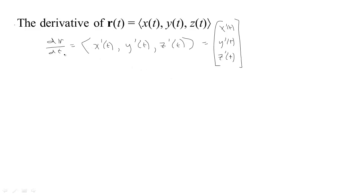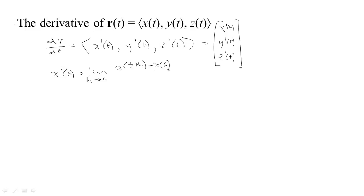So we take the derivative — what does that mean for this function? If you look at what X prime of T is, let's go back to the Calc 1 definition. It's the limit as H tends to zero of X of T plus H minus X of T, all over H.